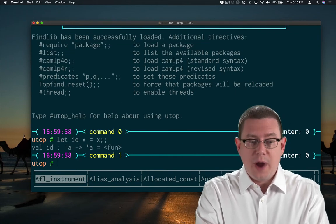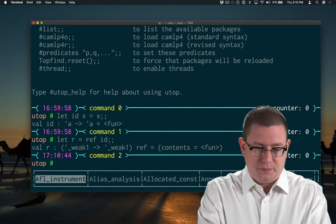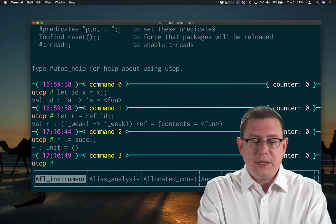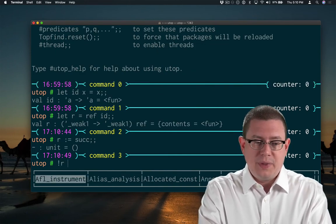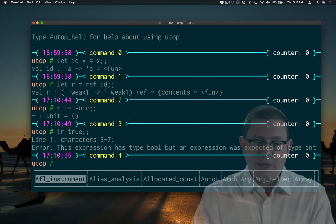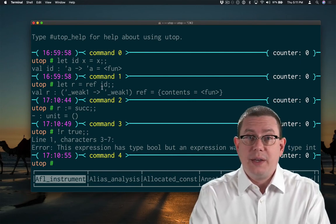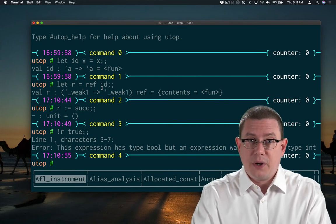Now, if I try to dereference that ref and apply it to a boolean, I get an error. This expression has type bool, but an expression was expected of type int. So OCaml doesn't allow this code to run. And in fact, there is a type error that occurs.